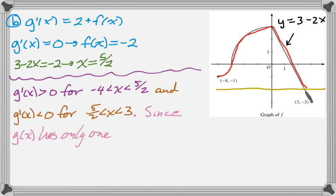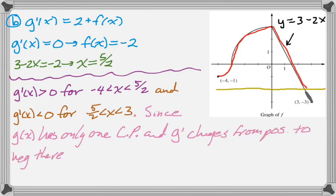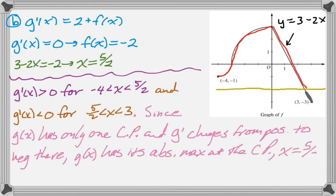And then I'm just going to summarize. Since g of x has only the one critical point, and since g prime changes from positive to negative at that critical point, that means that g of x must have its absolute maximum at the critical point. And the critical point is 5 halves. So that's how I would answer that question. It's not the way I would typically answer it. I'd usually use the candidate's test, but candidate's test on that thing would have been kind of challenging.